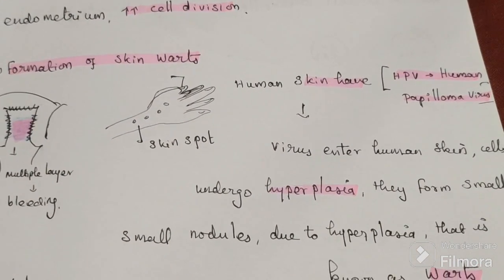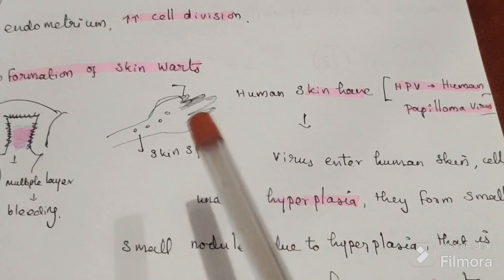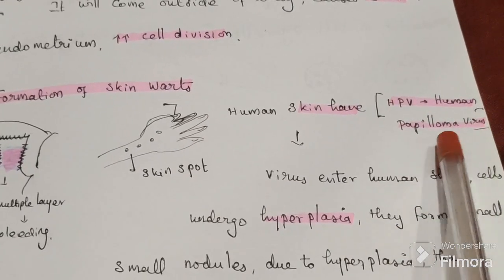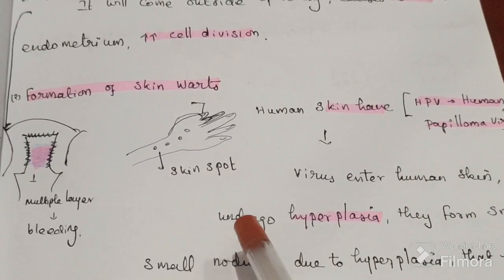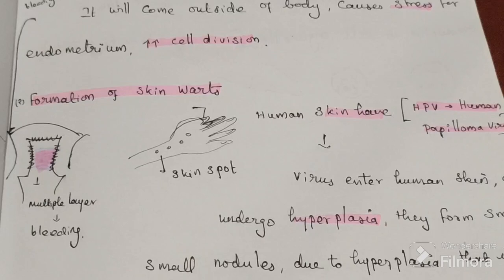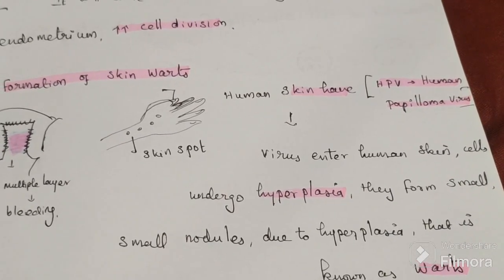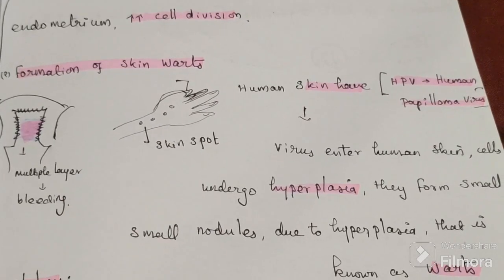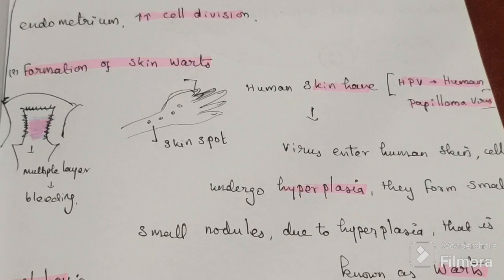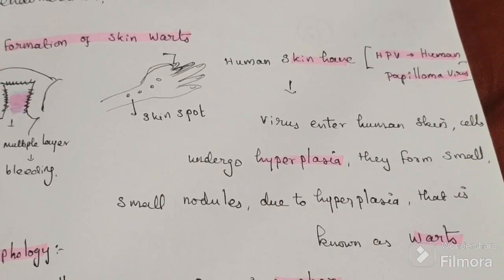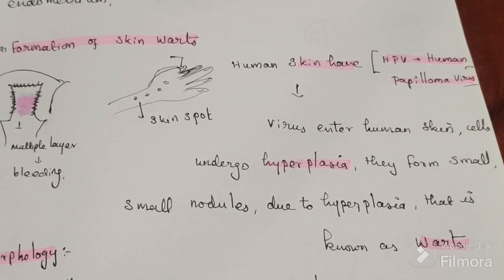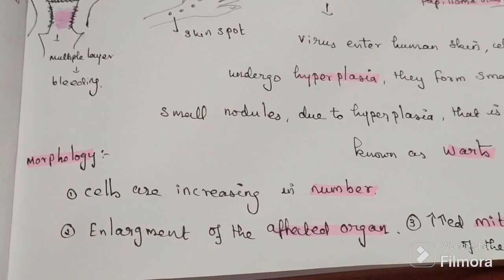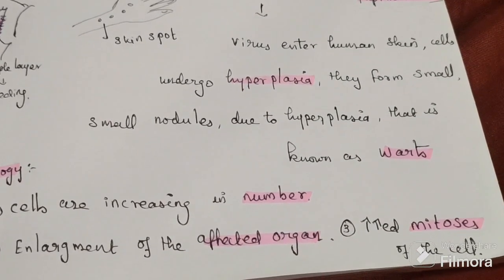Another pathological example is the formation of skin warts. The human papillomavirus (HPV), a sexually transmitted virus, enters the skin and acts as a stress. The skin cells undergo hyperplasia, dividing to form small nodules. This is known as a wart — formation of skin warts from hyperplasia of epithelium due to human papillomavirus. Morphologically: cells increase in number, the affected organ enlarges, and increased mitosis is observed.